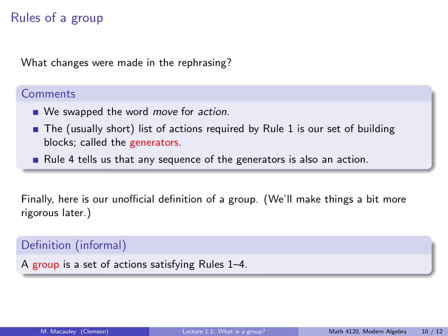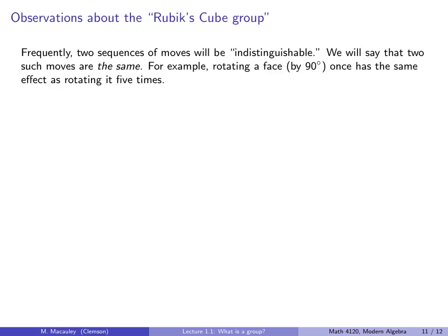And rule four tells us that any sequence of the generators is also an action. So, no matter how we put the generators together, we get another action. Okay, so here's our informal definition of a group. A group is a set of actions satisfying rules one, two, three, and four. And I want to emphasize, I'm saying, a group is a set of actions, that is, things that you do. So, in the setting of the Rubik's Cube, there is a difference between a configuration of the Rubik's Cube and an actual action of twisting the faces.